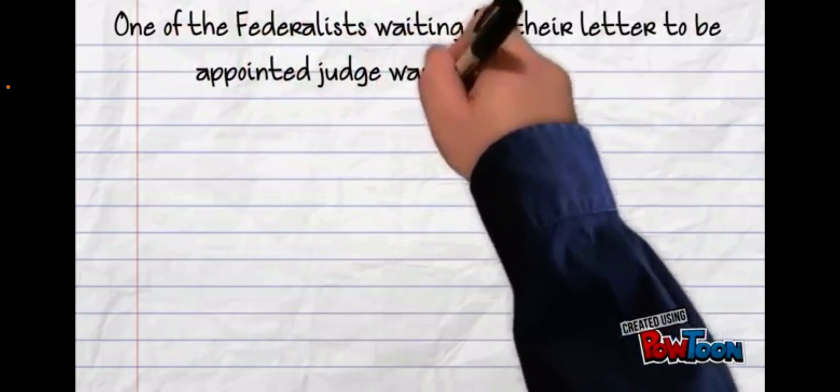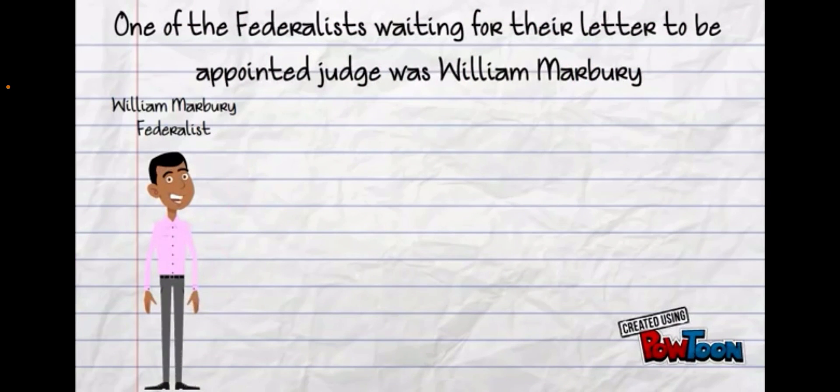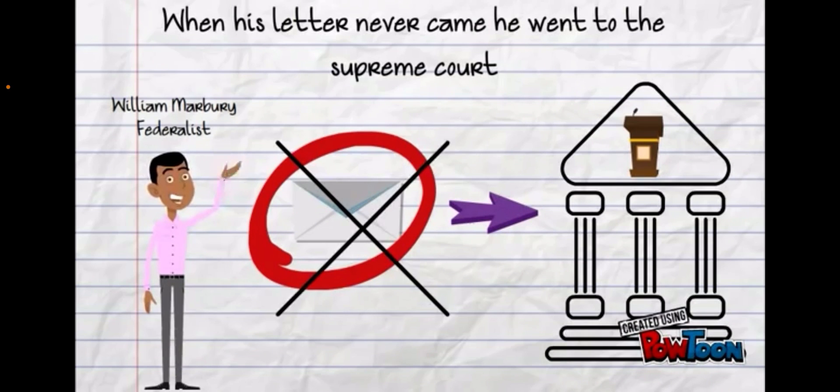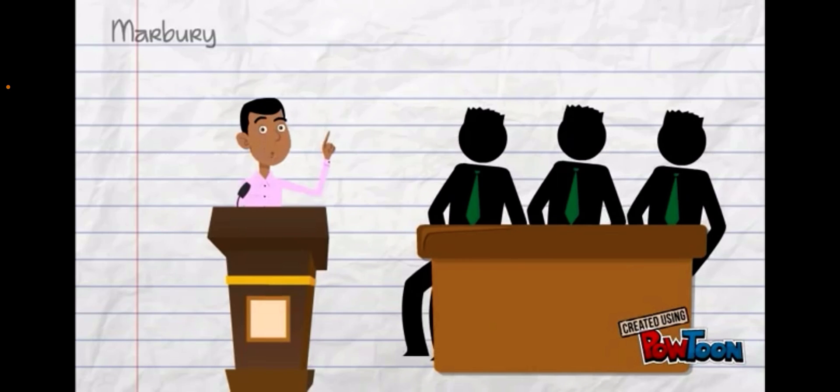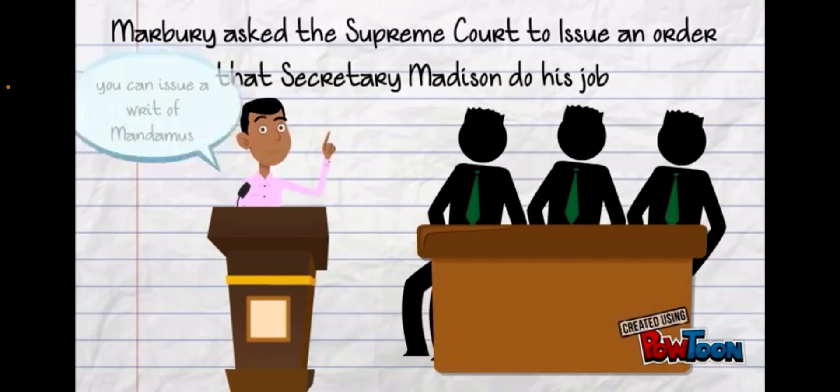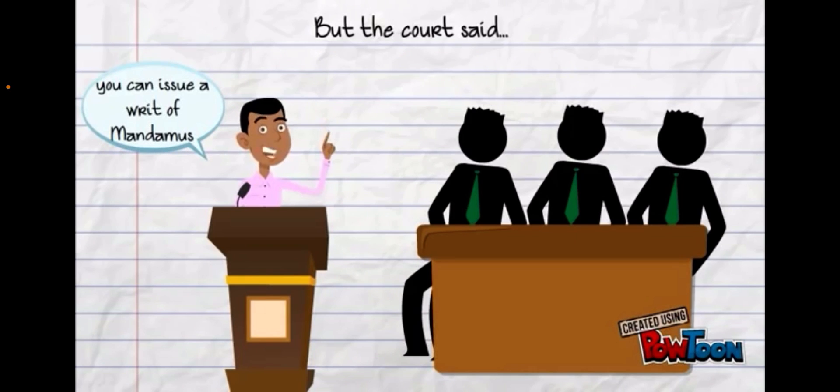When his letter never came, Marbury went to the Supreme Court. He asked the Supreme Court to issue an order that the Secretary Madison had to do his job and issue a writ of mandamus.